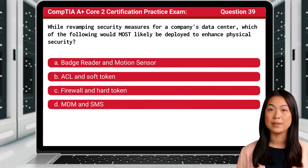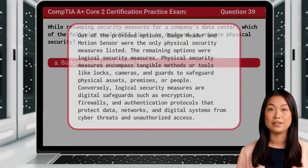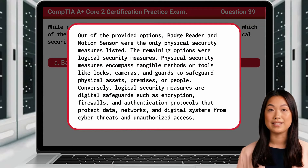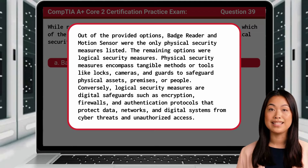Question 39. While revamping security measures for a company's data center, which of the following would most likely be deployed to enhance physical security? The answer is A: Badge reader and motion sensor. Out of the provided options, badge reader and motion sensor were the only physical security measures listed; the remaining options were logical security measures. Physical security measures encompass tangible methods or tools, like locks, cameras, and guards, to safeguard physical assets, premises, or people. Conversely, logical security measures are digital safeguards such as encryption, firewalls, and authentication protocols that protect data, networks, and digital systems from cyber threats and unauthorized access.